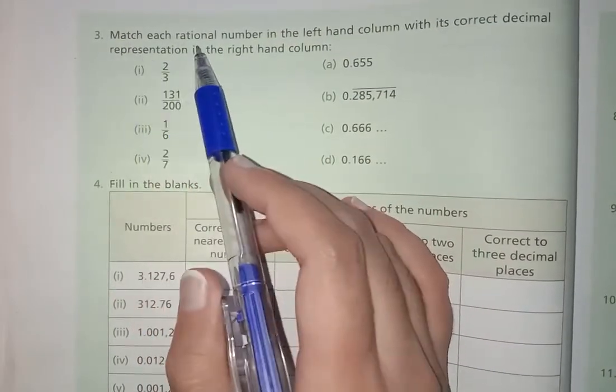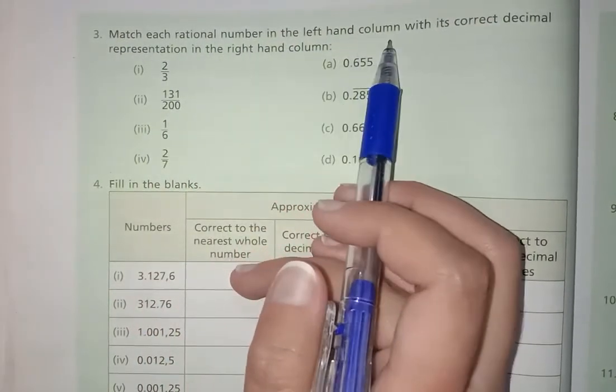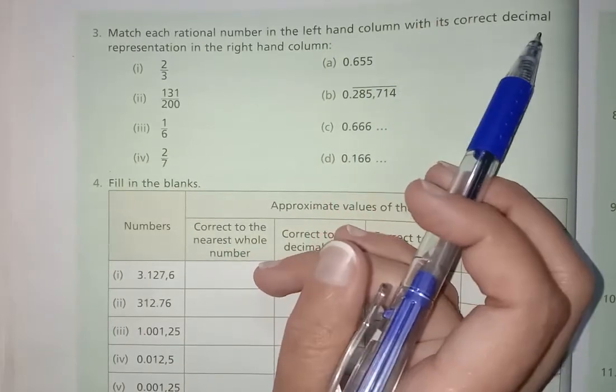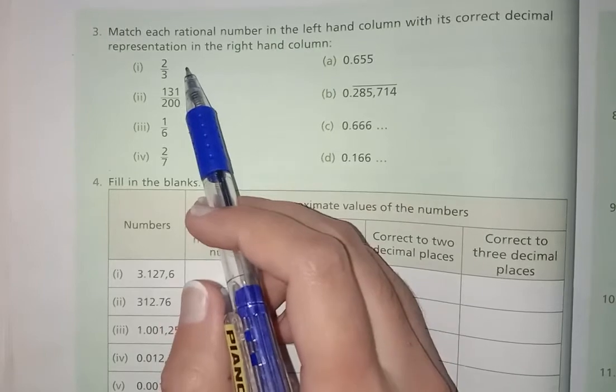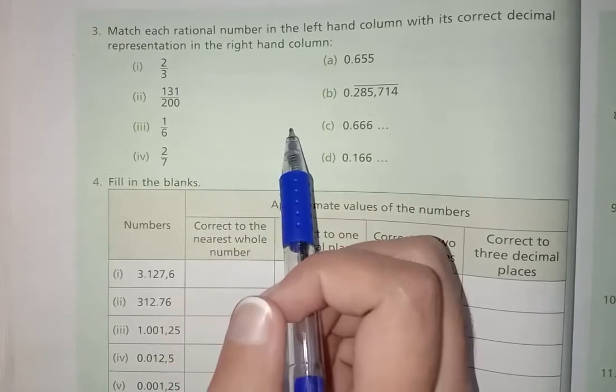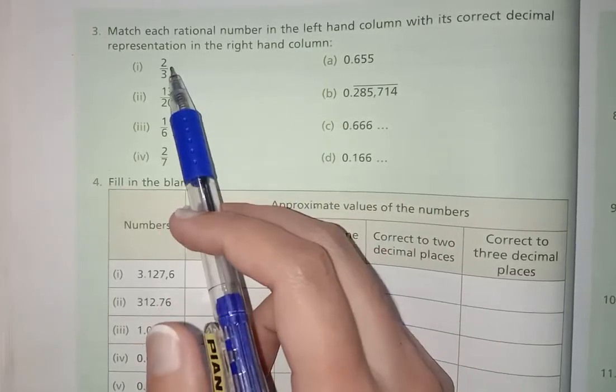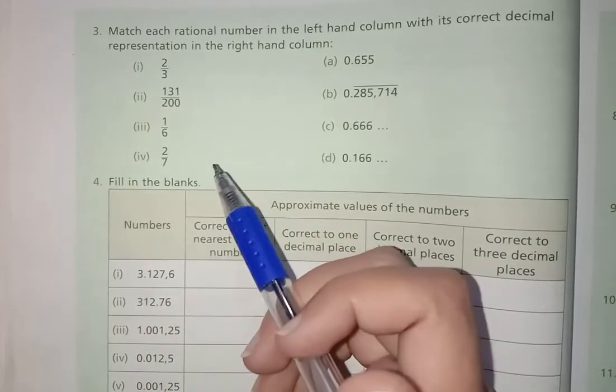Question 3 is: match each rational number in the left hand column with its correct decimal representation in the right hand column. This is just like matching the columns. We have to match the numbers, but which number matches with which number we have to find it.